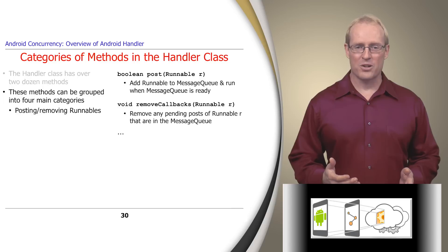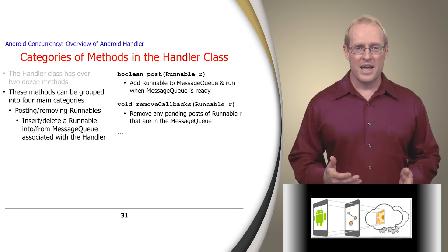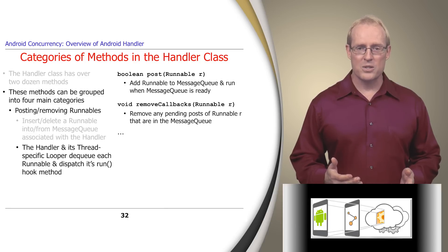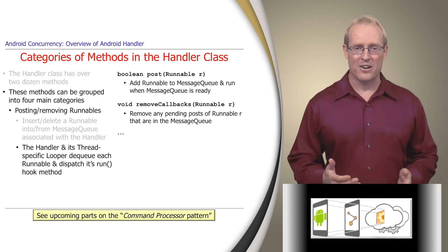The first category of handler methods enable programs to post or remove a runnable by inserting it into or deleting it from the message queue associated with the handler. When a runnable is posted, the handler and its thread-specific looper then collaborate to dequeue each runnable and dispatch its run hook method, in accordance with the command processor pattern, described in these upcoming videos.